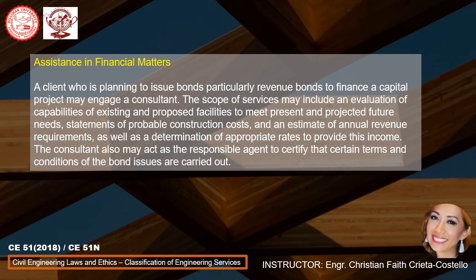Assistance in financial matters: a client who is planning to issue bonds, particularly revenue bonds, to finance a capital project may engage a consultant. The scope of services may include an evaluation of capabilities of existing and proposed facilities to meet present and projected future needs, statements of probable construction costs, and an estimate of annual revenue requirements, as well as the determination of appropriate rates. The consultant may also act as the responsible agent to certify that certain terms and conditions of the bond issue are carried out.